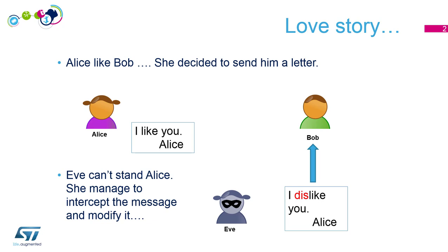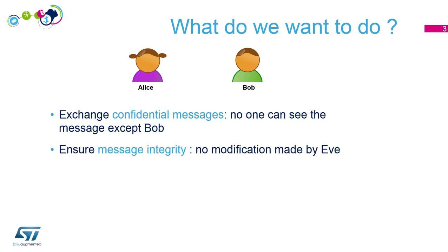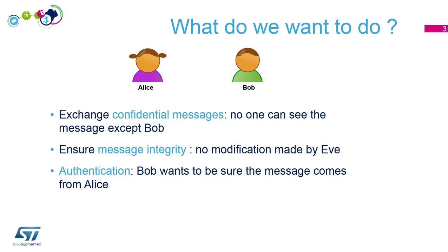How can we help Alice and Bob? First, we would like to have confidentiality of the message — we want to be sure that only Bob can read messages coming from Alice, nobody else. Then we want to keep message integrity: we don't want Eve to be able to modify the message, or we want Bob to be aware of any modification. And the last point, we want authentication — Bob wants to be sure the message is coming from Alice and not from somebody else.